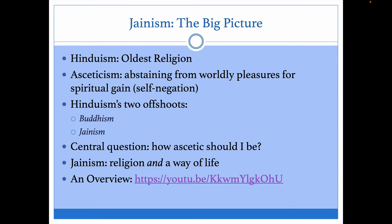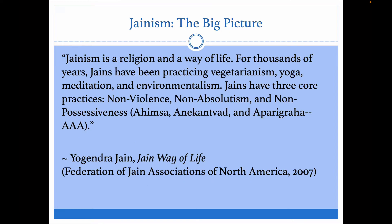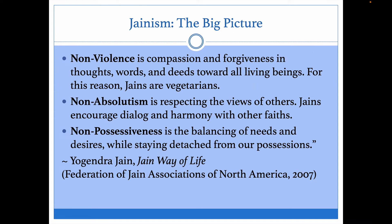From the Jain Way of Life and the Federation of Jain Associations in North America, they say: "Jainism is a religion and a way of life. For thousands of years, Jains have been practicing vegetarianism, yoga, meditation, and environmentalism. Jains have three core practices: nonviolence, non-absolutism, and non-possessiveness." These are known by their Sanskrit words. They go into detail about all of these.